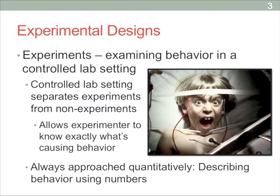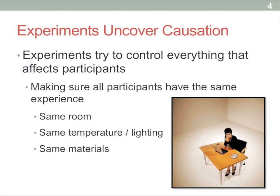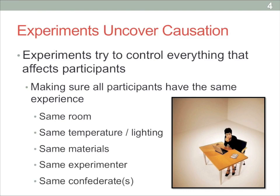We always want to have numbers so that we can analyze things statistically to look for significance. With experiments, you want to control everything that affects participants. One key part is making sure all participants have the same experience except for the one thing you're varying between groups. For each participant, you want to make sure they're in the same setting, the same room, with the same temperature and lighting, the same experimental materials, the same experimenters, and the same confederates — wanting to keep everything the same because all these things can affect behavior.